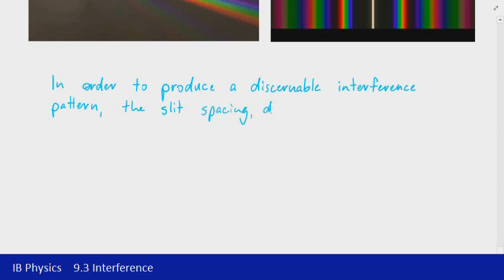Now in order to produce a discernible interference pattern, so that means one that we can actually see the separation of colors and can make some measurements from, we need to consider the wavelength of the light and the separation of the slits that are being used. And so it's not really going to produce any interference pattern for any combination of slit width and wavelength. They need to be carefully calibrated. The slit spacing, or the slit separation, that's the value d, must be comparable to the wavelength. By comparable, we don't mean that it needs to be exactly the same, just that it is in the same sort of ballpark figure, so no more than a factor of 10 bigger or smaller.